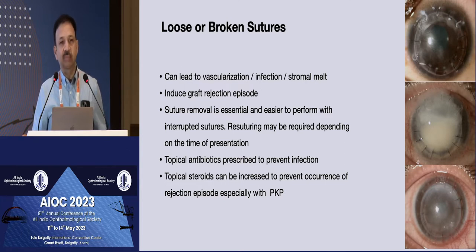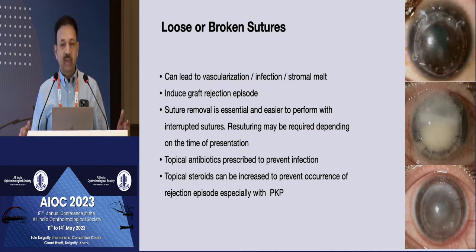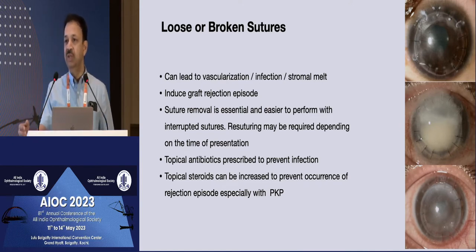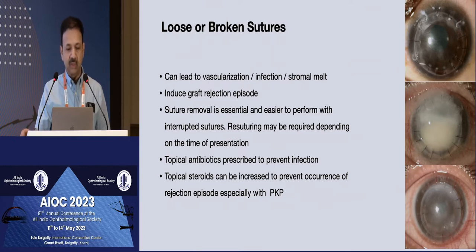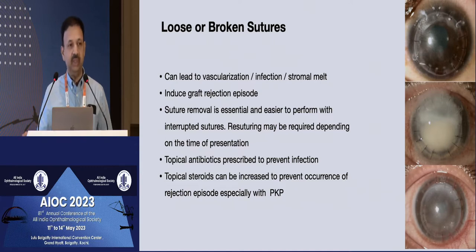Broken or loose sutures can bring in blood vessels which can result in a graft rejection episode. If associated with debris or mucus accumulation, you can get secondary infection, melts. Even the primary corneal surgeon may not be the person following up the patient, so it's important for a general ophthalmologist to get the sutures removed at the right time. Leaving them loose or present for a long time can affect the long-term outcome. Use of topical antibiotics should be started; sometimes with broken sutures, if there are no infiltrates, you can step up the steroids as well, because broken sutures can lead to inflammation or endothelial rejection.